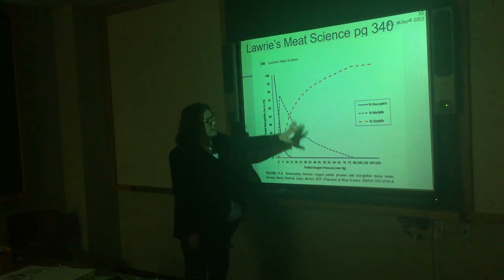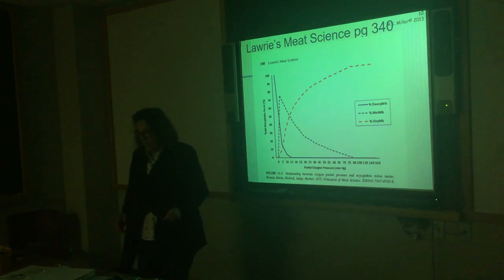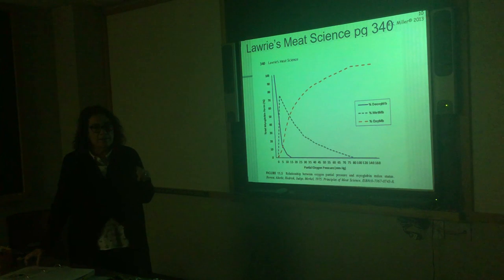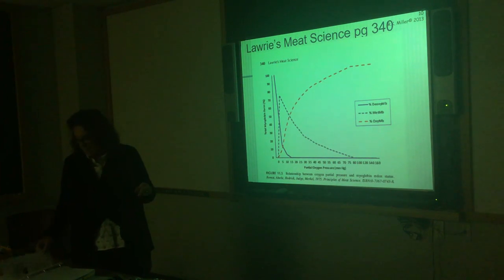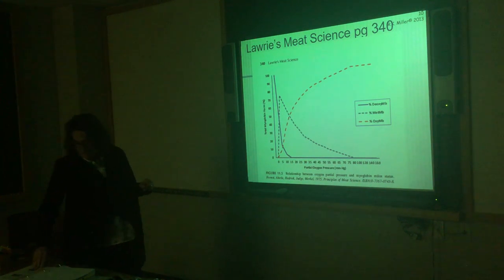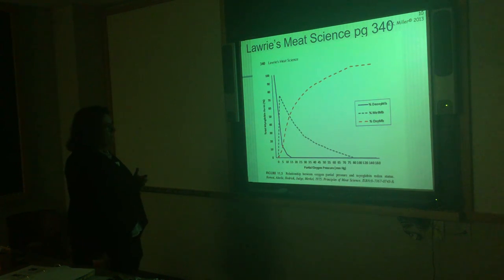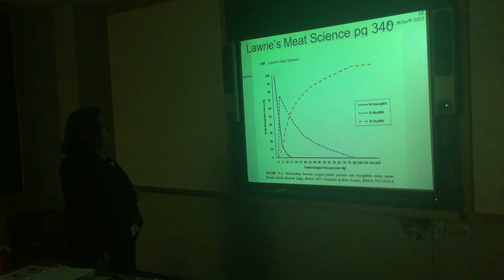One of the key points is that when you look at a piece of meat, it's very seldom 100% in one form of pigment. Even in aerobic packages you're going to have some metmyoglobin. There's probably a little bit of deoxymyoglobin right below the surface, and then oxymyoglobin at the surface.